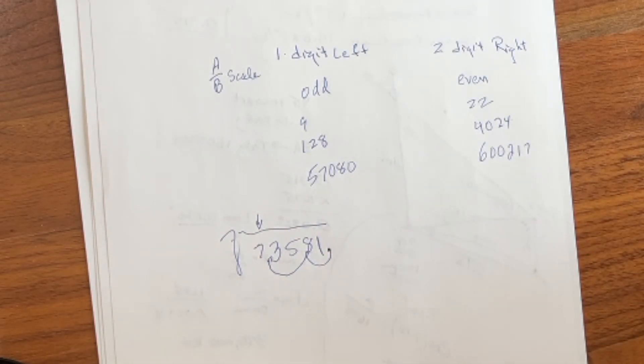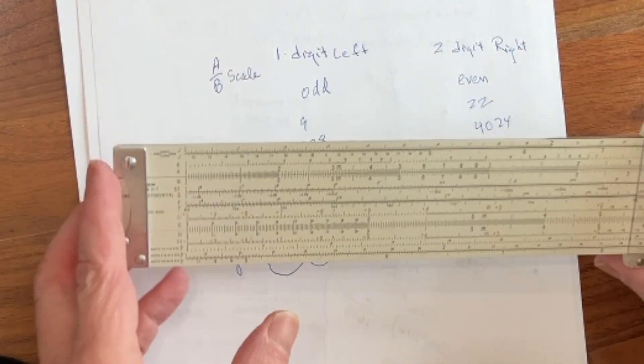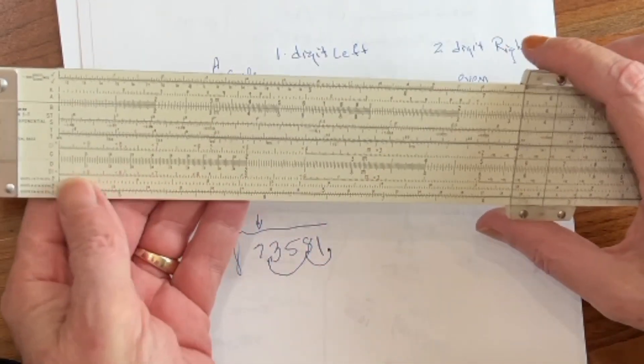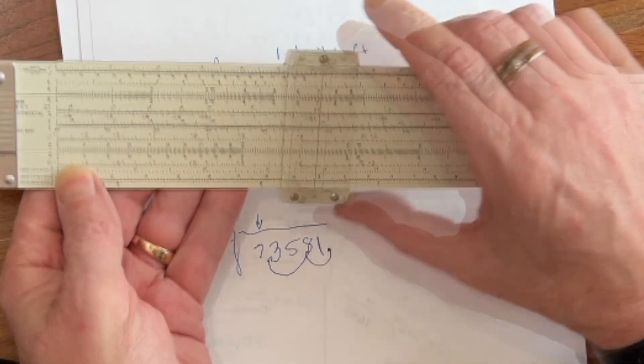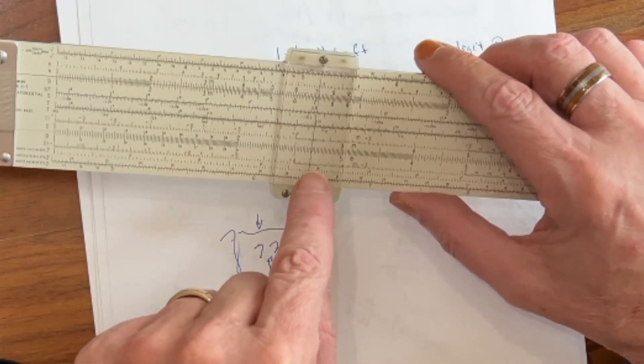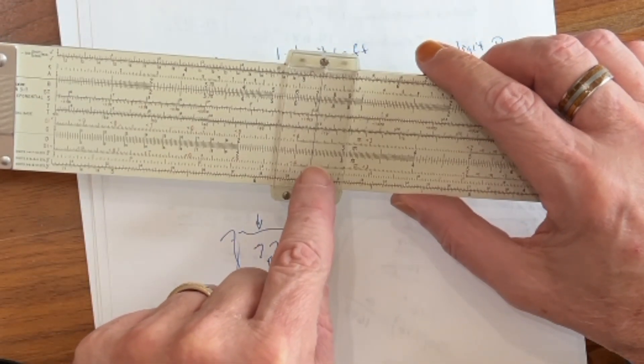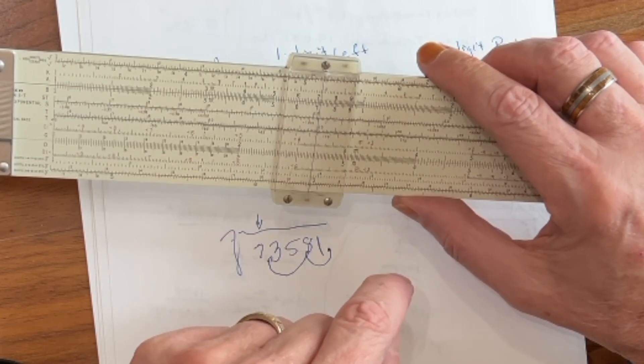So what we'll do on the slide rule is we'll just come right over here, and on the A-B scale, we'll go to 7.3581. So there's seven. That's about 735 right there. And then we're going to read straight down and have a look on the C and D scale what we have. And I see 2.66.